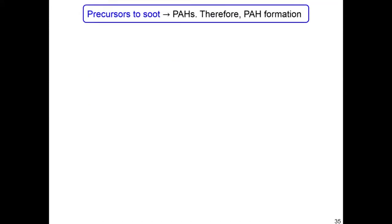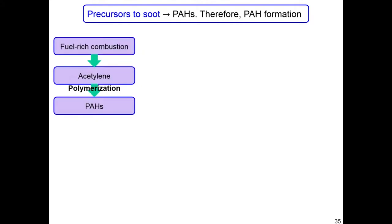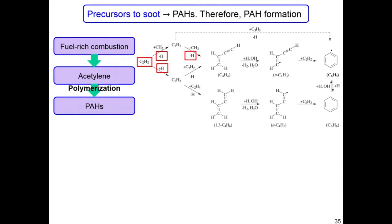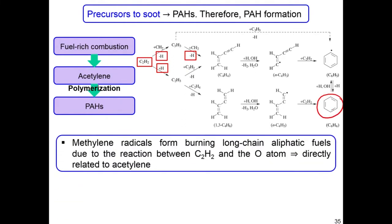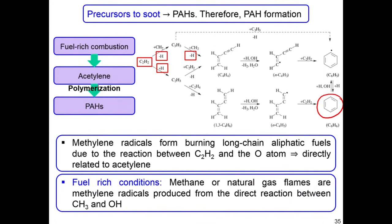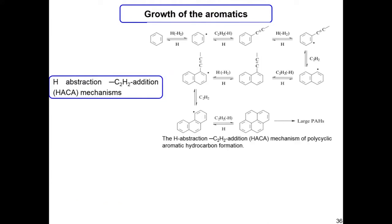There is also a precursor to soot called polycyclic aromatic hydrocarbons (PAH). Fuel-rich combustion produces acetylene, which leads to polymerization and formation of polycyclic aromatic hydrocarbons. Whenever there is fuel-rich combustion, it leads to formation of acetylene molecules, which leads to formation of benzene rings. Methylene radicals from burning long-chain aliphatic fuels arise from the reaction between C2H2 and O atoms and are directly related to acetylene. In fuel-rich conditions with methane or natural gas flames, methylene radicals also form from direct reaction between CH3 and OH.